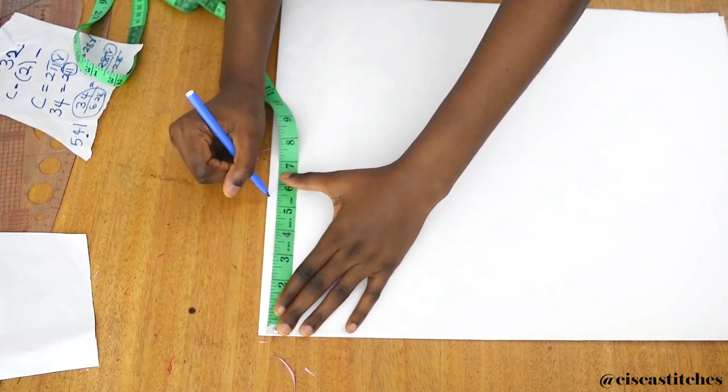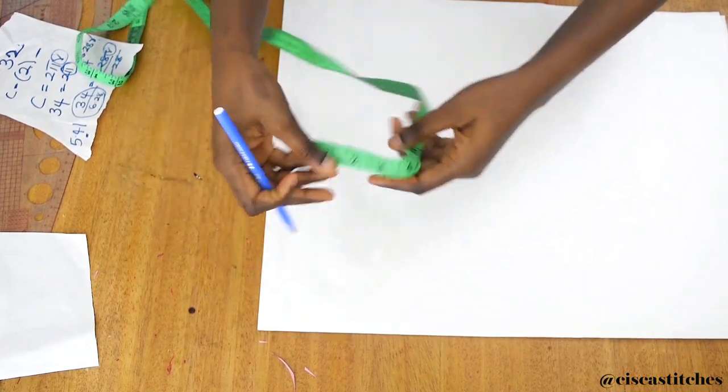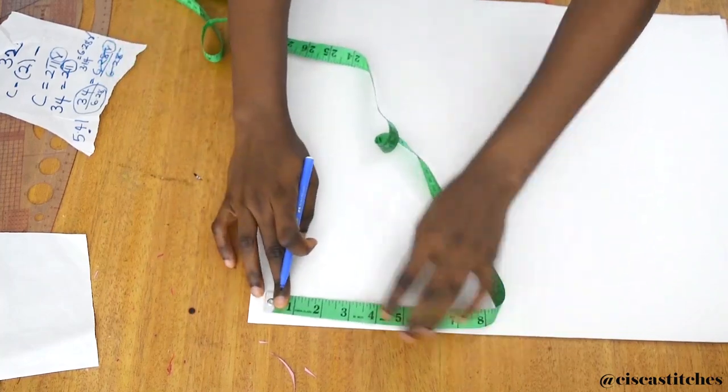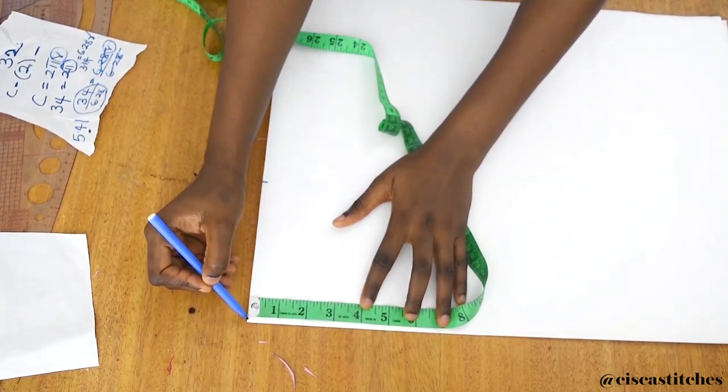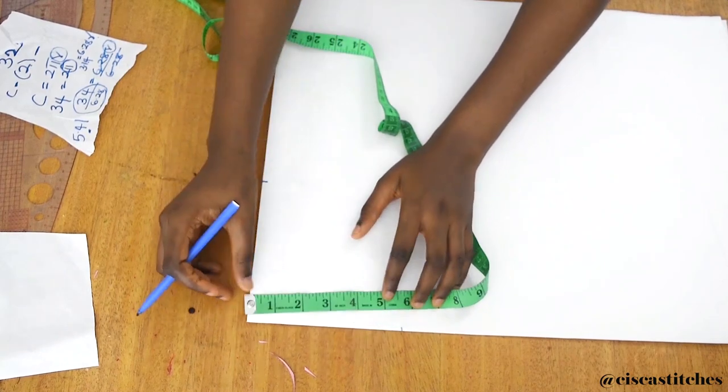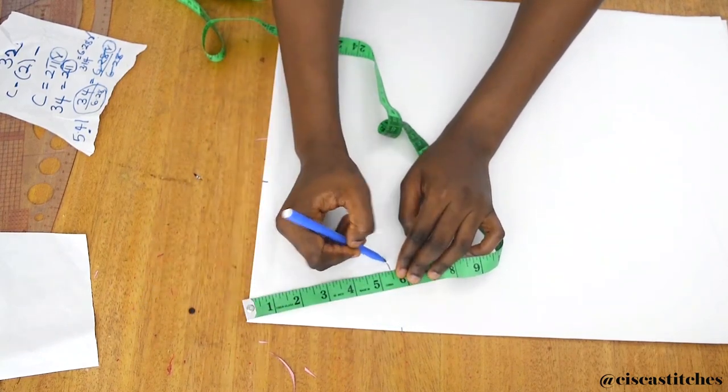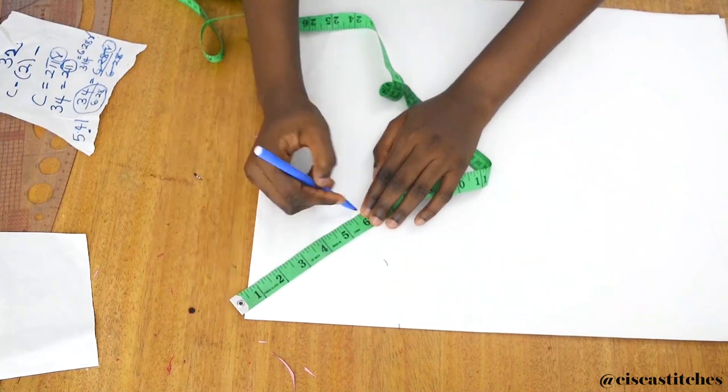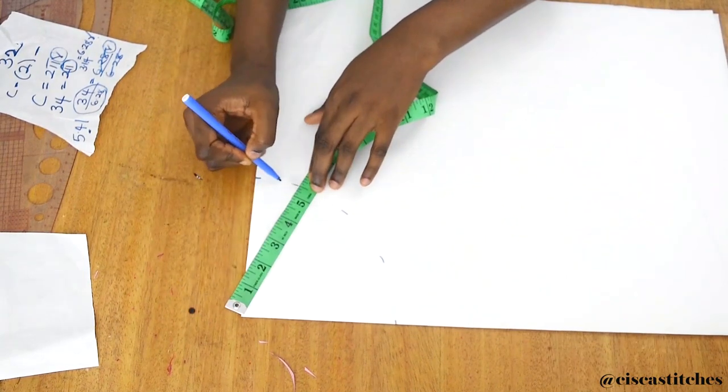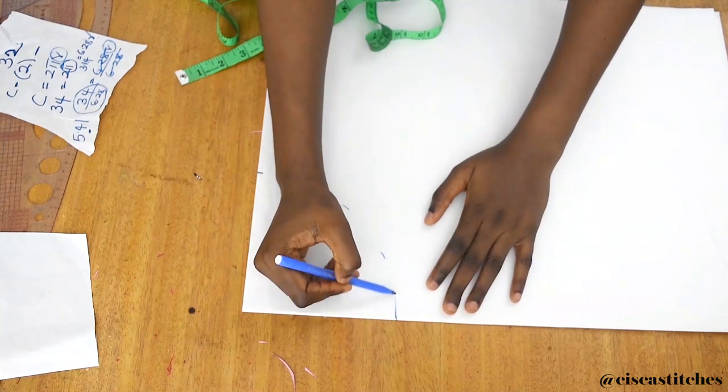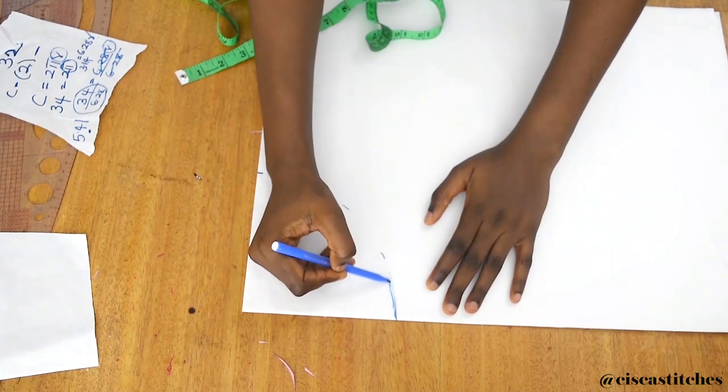The 5.41 that I calculated, I'm going to come right here and mark it. But since I don't have 5.41, I'm going to go with 5.5. More is better than less. I'll come right here and mark 5.5 all around from this point here. Just keep marking that 5.5. After marking, I'm going to go ahead and connect it like this.